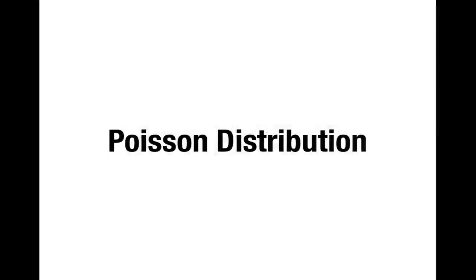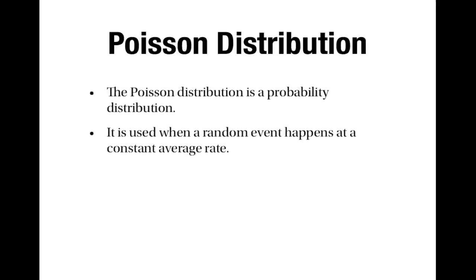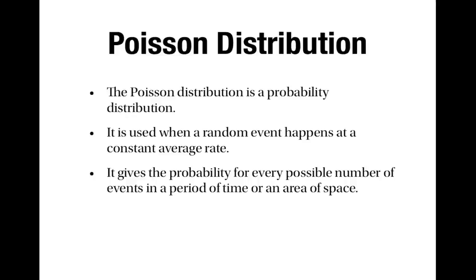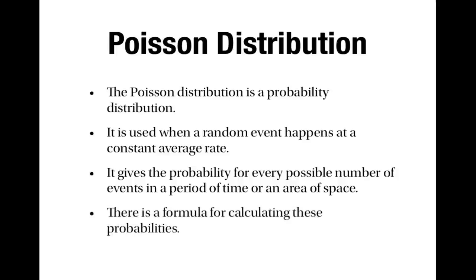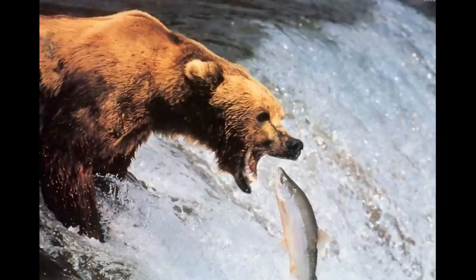The Poisson distribution is a probability distribution used when a random event happens at a constant average rate. It gives the probability for every possible number of events in a fixed period of time or a particular area of space, and there's a formula for calculating these probabilities. For example, suppose a bear goes fishing and catches on average five fish per hour. We might be interested in the probability he catches three fish in a particular hour, or ten fish over two hours, and we could use the Poisson distribution to find both of these probabilities.